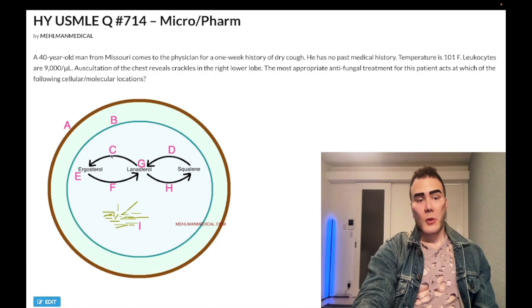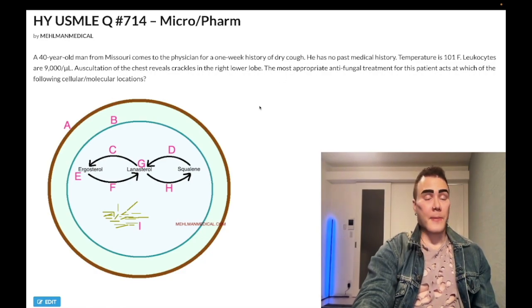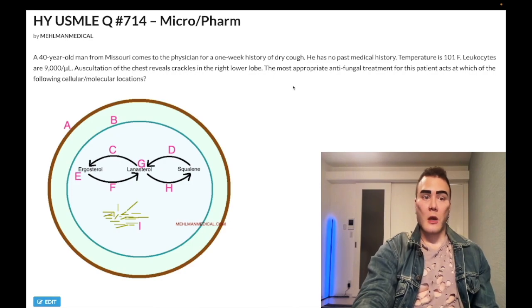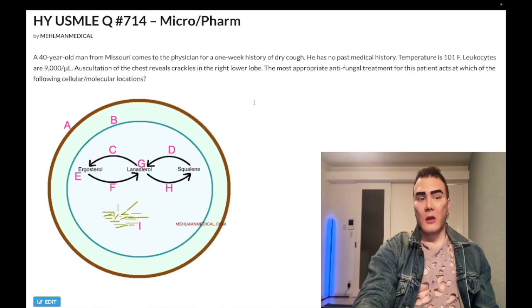Choice C refers to the azoles, correct answer. The conversion of lanosterol to ergosterol is via 14-alpha-demethylase. Azoles, usually fluconazole, is just the typical generic antifungal used for most cases of fungal pneumonia. Here we just have what appears to be a simple fungal pneumonia in an immunocompetent patient. No past medical history. Ohio, Mississippi River Valley, Missouri. We don't need to know which fungal infection in particular—it could be histo, could be blasto, doesn't really matter. Azoles are what are typically used. So fluconazole.